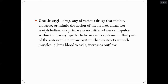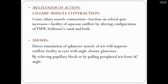Pilocarpine is classified as a cholinergic drug because it inhibits, enhances, or mimics the actions of the neurotransmitter acetylcholine. It is a primary neurotransmitter of nerve impulses within the parasympathetic nervous system, which is part of the autonomic nervous system. It contracts smooth muscles, dilates blood vessels, and increases outflow. It acts in both open-angle glaucoma and angle-closure glaucoma.